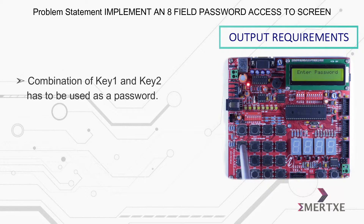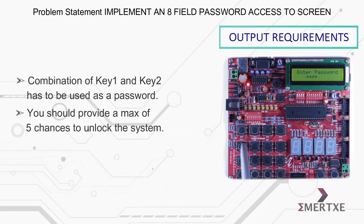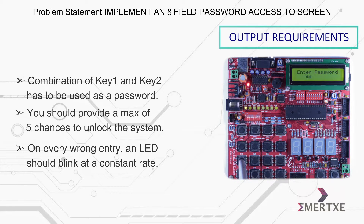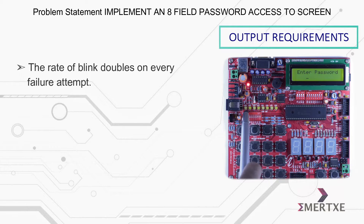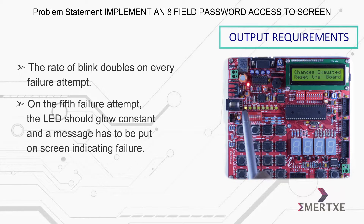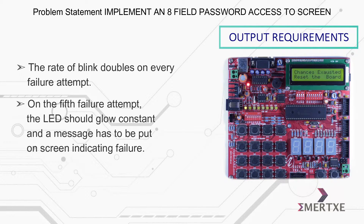A combination of key1 and key2 has to be used as a password. You should provide a maximum of 5 chances to unlock the system. On every wrong entry, an LED should blink at a constant rate, and the rate of blink doubles on every failure attempt. On the fifth failure attempt, the LED should glow constantly and a message indicating failure has to be displayed on the screen.